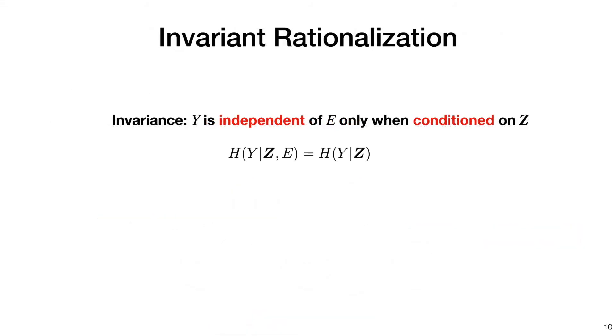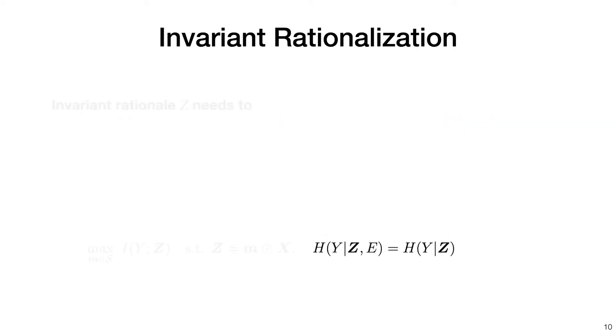Here is a more formal definition of invariance. An invariant feature z is defined as a feature conditional on which the output is independent of the environment. Or equivalently, the entropy of y given z and e should be the same as the entropy of y given z.